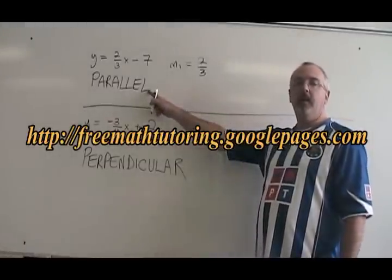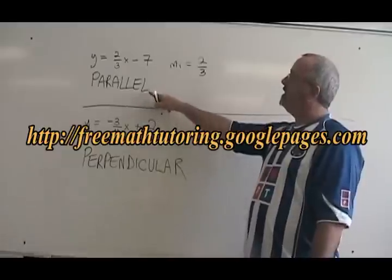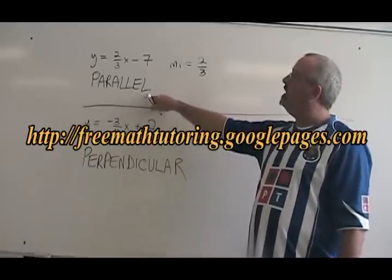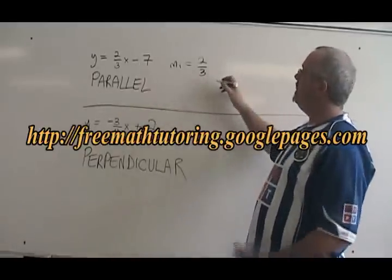If two lines are parallel, they have the same slope. So to find the slope of a parallel line, a line that is parallel to this one, we have to apply this rule.